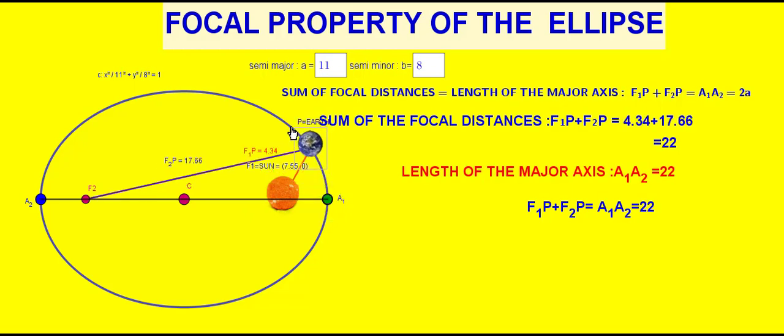When the earth is at a2, that is far away from the sun, we experience winter season.